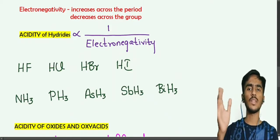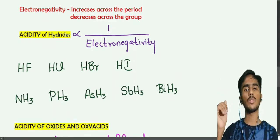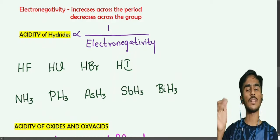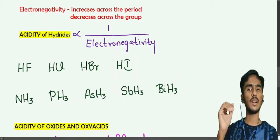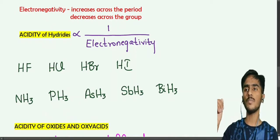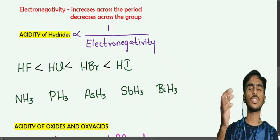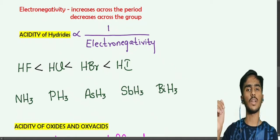From top to bottom in the group, electronegativity decreases. Iodine has less electronegativity than fluorine. Since acidity is inversely proportional to electronegativity, HI has greater acidity than HF, which has the least acidity.